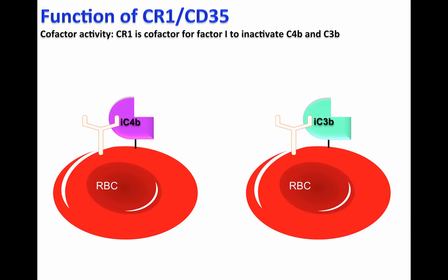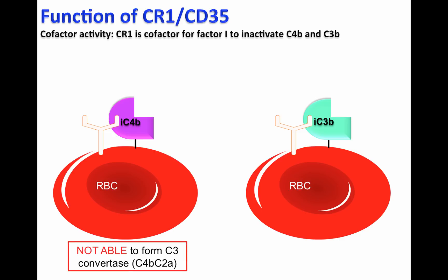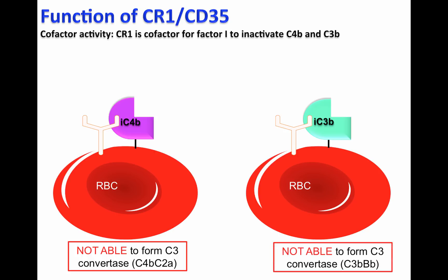iC4b, or the inactive form of C4b, will not be able to form the C3 convertase C4b-C2a during the process of complement activation. iC3b, or the inactive form of C3b, will not be able to form the C3 convertase C3b-Bb. So, as you can see, CR1 plays a fundamental role — it is a cofactor for Factor I that allows inactivation of C4b and C3b.